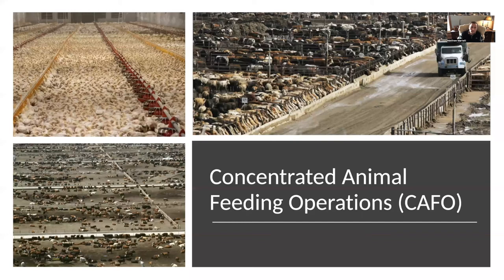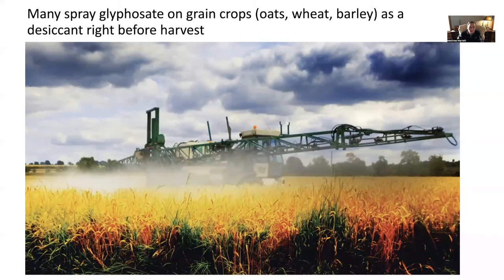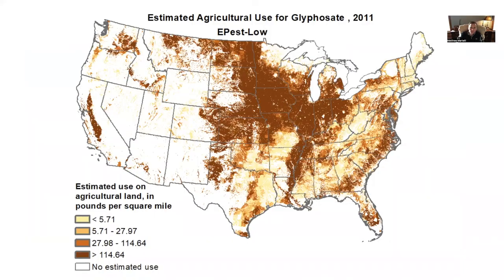All of this grain is trucked out to concentrated animal feeding operations. Many people also spray glyphosate on grain crops as a desiccant right before harvest — not just Roundup Ready crops, but crops that need to dry down before going to the grain elevator for sale. This map shows the estimated agricultural use of glyphosate in 2011 in the United States — a tremendous amount.